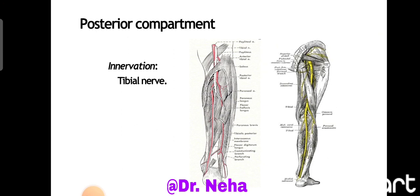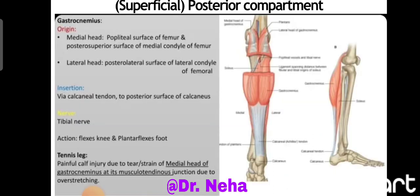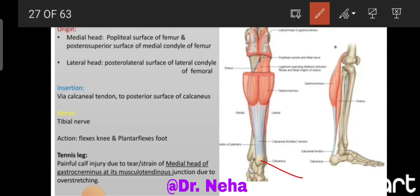The posterior compartment is innervated by the tibial nerve, which is a branch of the sciatic nerve. In the superficial compartment we have gastrocnemius, plantaris, and soleus. The gastrocnemius has two heads — a medial head and a lateral head. The lateral head arises from the posterolateral surface of the lateral condyle of the femur, and the medial head arises from the popliteal surface of the femur and the posterior superior surface of the medial condyle of the femur. The insertion is via the calcanean tendon to the posterior surface of the calcaneus. This muscle is supplied by the tibial nerve, the only nerve in the posterior compartment supplying all these muscles.